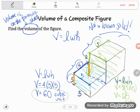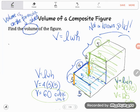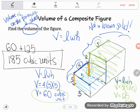So now what am I going to do with these two numbers? Well you just figured out that this blue box in front has 60 cubic units and this green box in the back has 125 cubic units. If you want the total of both pieces put together, let's add them: 60 plus 125 gives me a total of 185 cubic units.